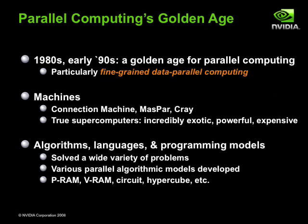These machines were true supercomputers in every sense of the word. They were exotic, powerful, and expensive. Only a handful of privileged users around the world had access to them, mostly at national labs and major universities. Despite the limited availability of such machines, there was a great deal of excitement about parallel computing, resulting in a wealth of papers and articles on the subject published at the time.